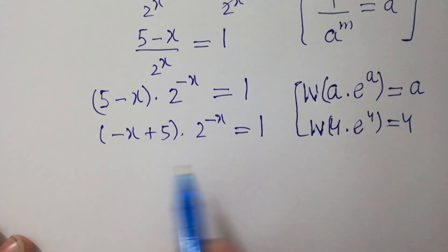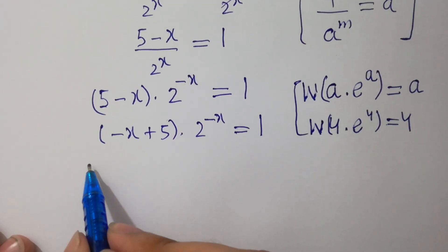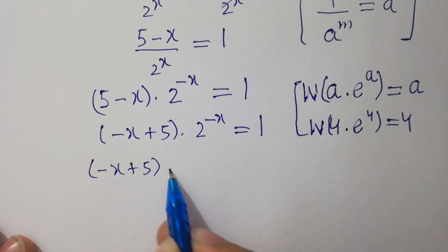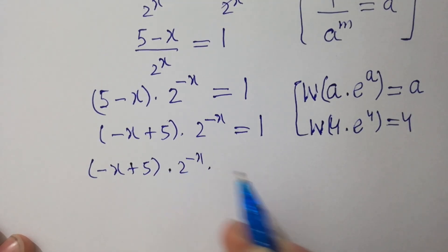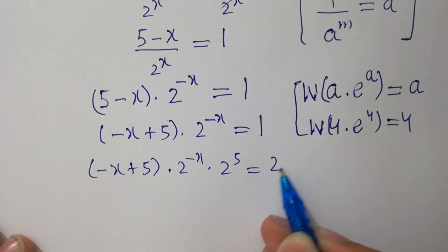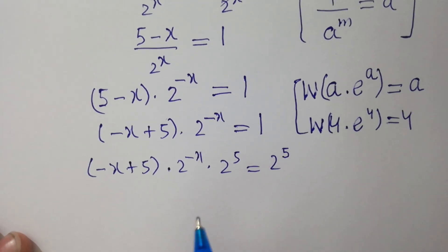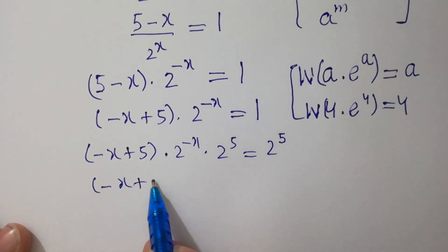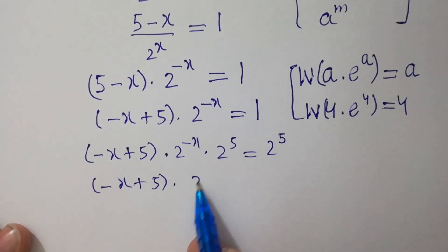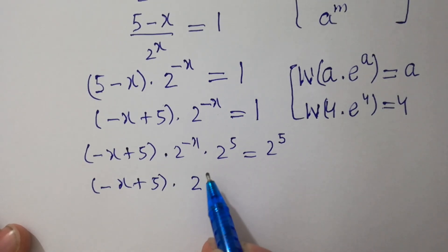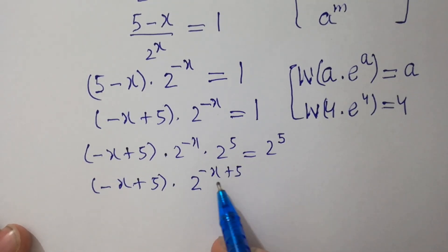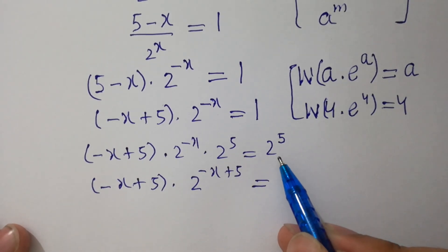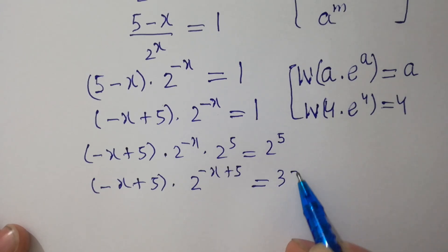Now, multiply both sides by 2 to the power 5. Since the bases are the same, we get minus x plus 5 times 2 to the power minus x plus 5, where the exponents add, equal to 2 to the power 5, which equals 32.